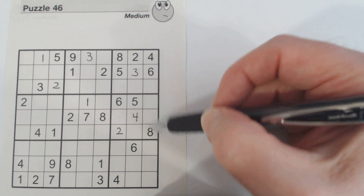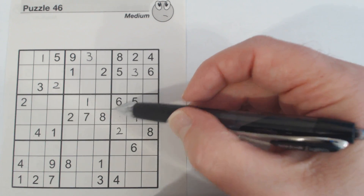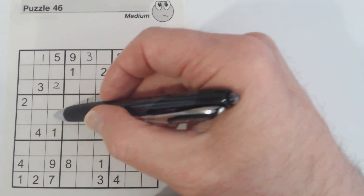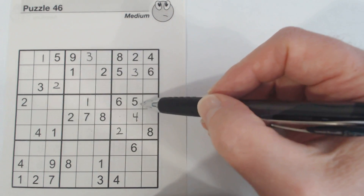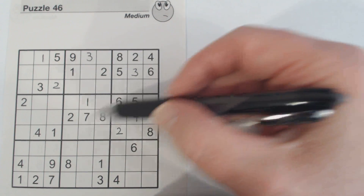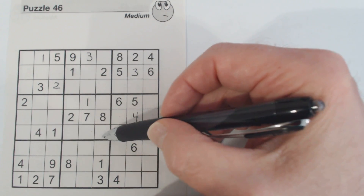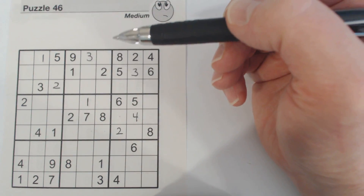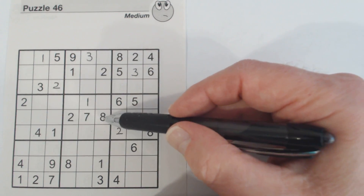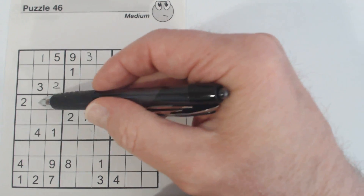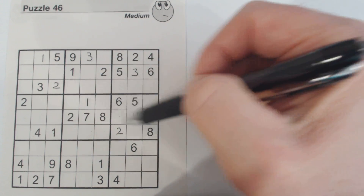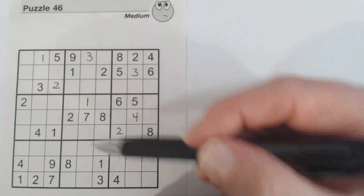Looking at 6, 5, and 8 in the middle section: for the 6s, I don't think we can find any of those yet. For the 5s, same. For the 8s — checking through — we can't find those either. Moving to the bottom wall: there's an 8 here and an 8 here, and there's an 8 already there, so we can fill one in.